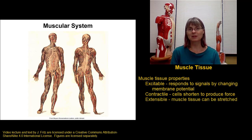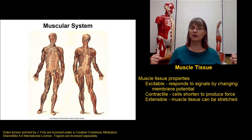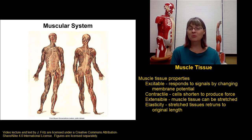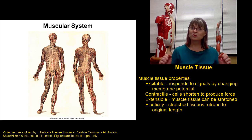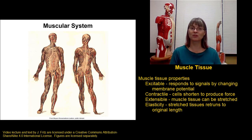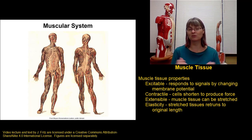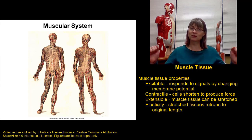The third property is that muscle tissue is extensible, meaning it can be stretched. Related to that is the property of elasticity — once we stretch the muscle tissue, it recoils back to its original length. That property of returning to the original length once it's been stretched is elasticity. So we can stretch it, but it goes back to its normal shape again.